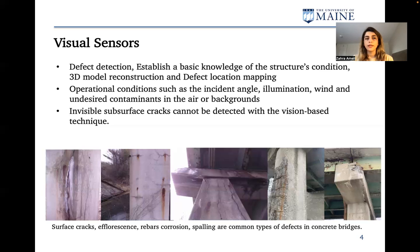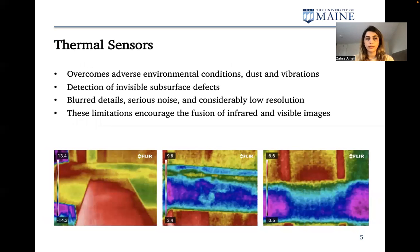This sensor is also unable to detect invisible subsurface cracks. So another type of sensor, called thermal or infrared sensors, is usually used. This sensor overcomes adverse environmental conditions such as dust and vibration, and it is able to detect invisible subsurface defects, but it has its own limitations. For example, blurred details, serious noise, and low resolution are some limitations of this type of sensor.